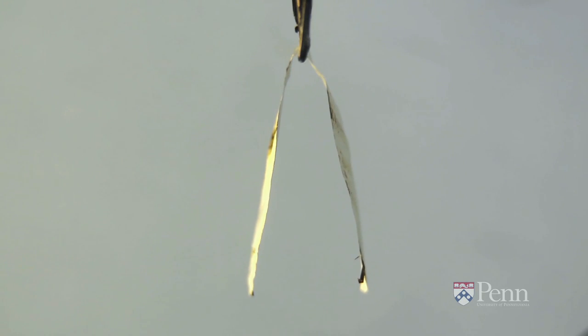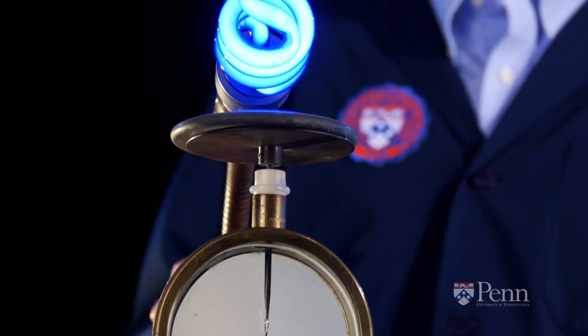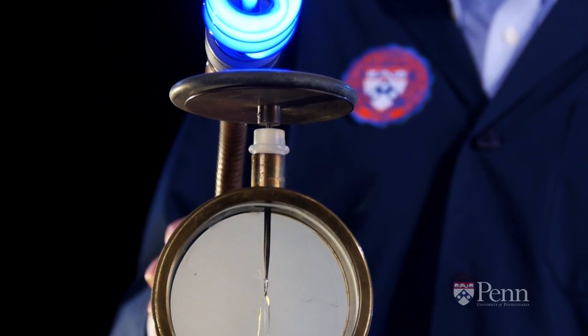The electroscope begins to lose charge. The leaves begin to move together, and the ultraviolet light is removing electrons from the zinc.